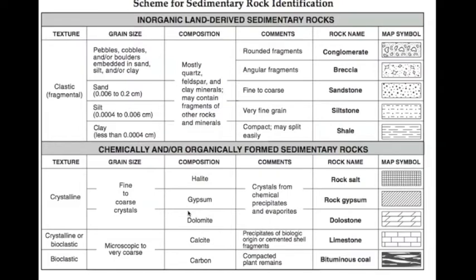One of the rock types is sedimentary. This graph is used to identify the different types of sedimentary rocks by texture, such as clastic or crystalline, grain size, composition, or the minerals in the rocks, comments, rock name, and map symbol.